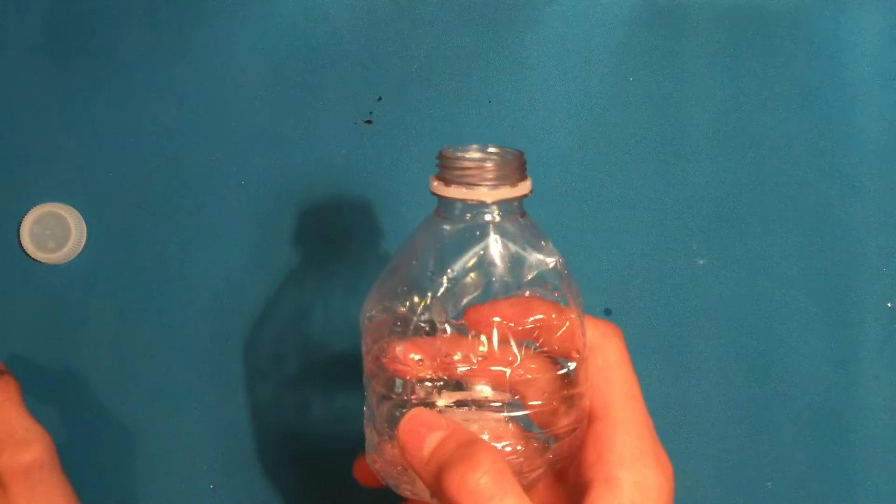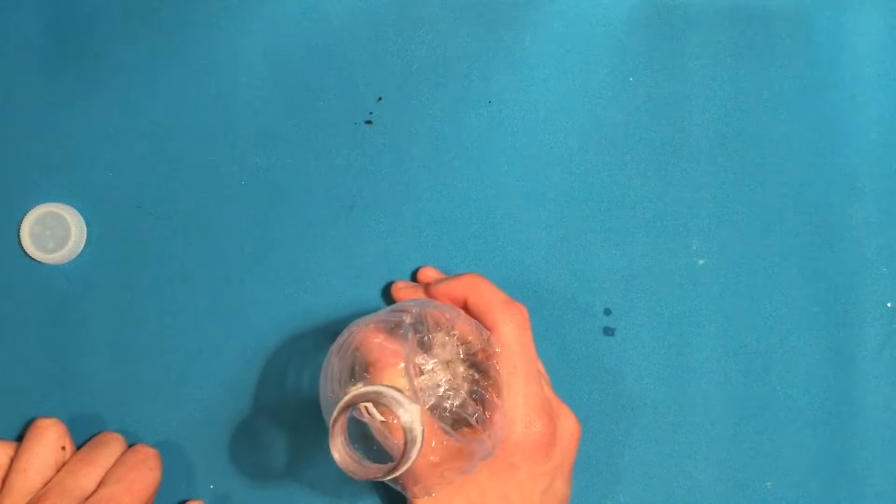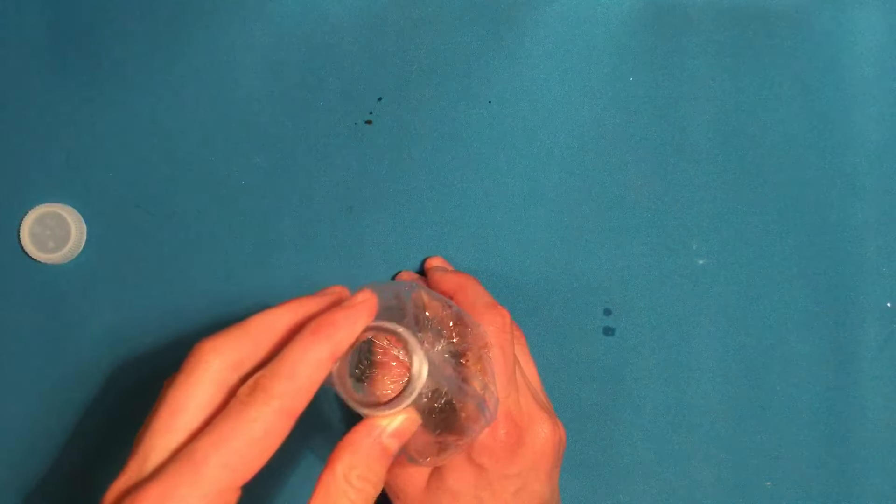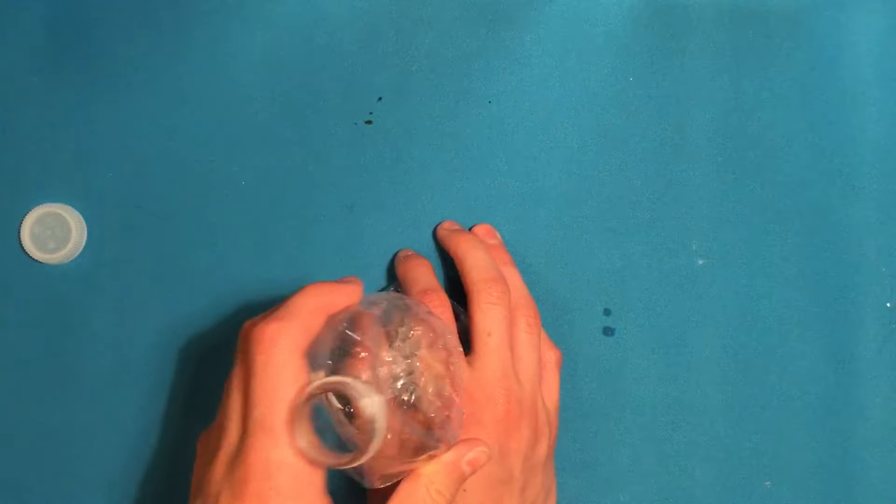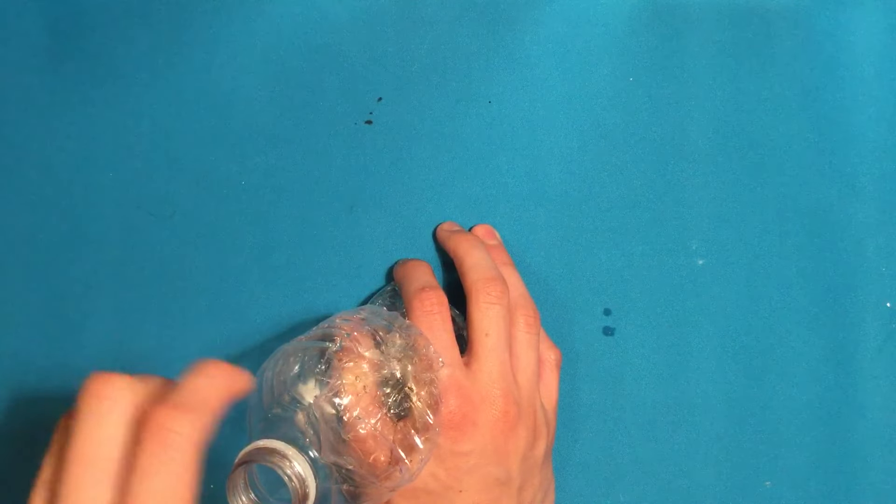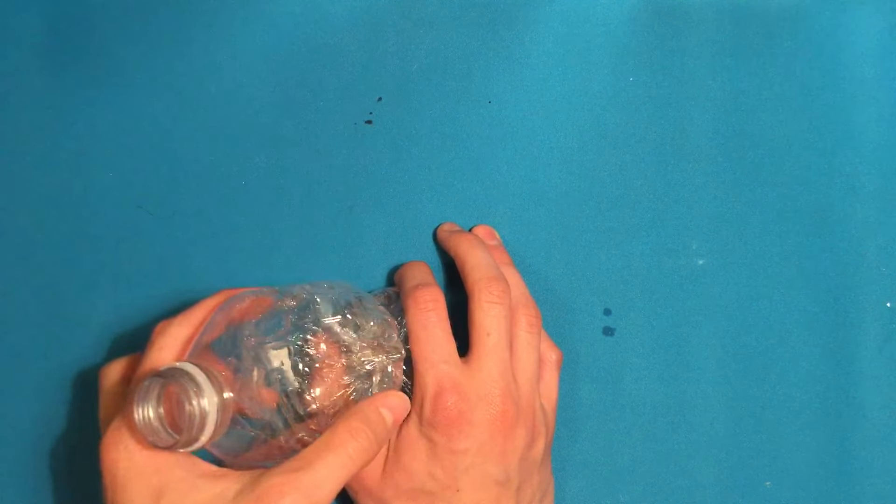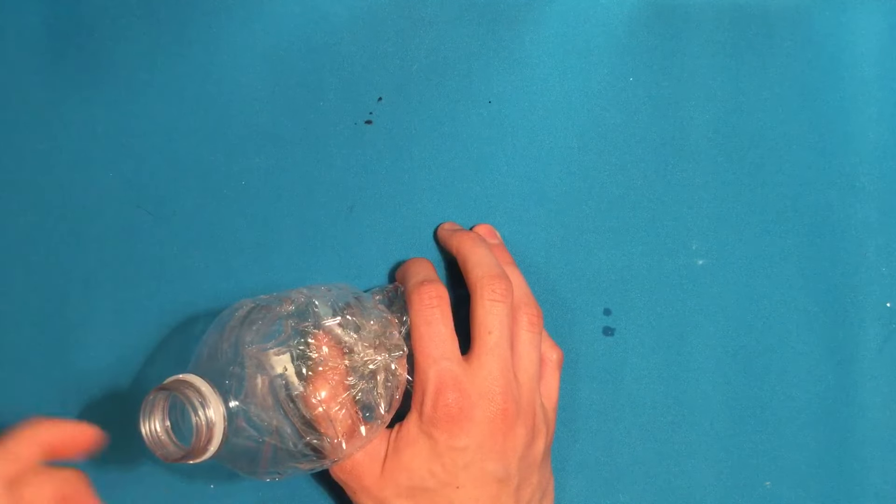So that water vapor, that's actually how a cloud forms. I don't know the exact details on it, but basically if you apply pressure and then you release the pressure, the water vapor will condense and it'll create like a cloud inside the water bottle.